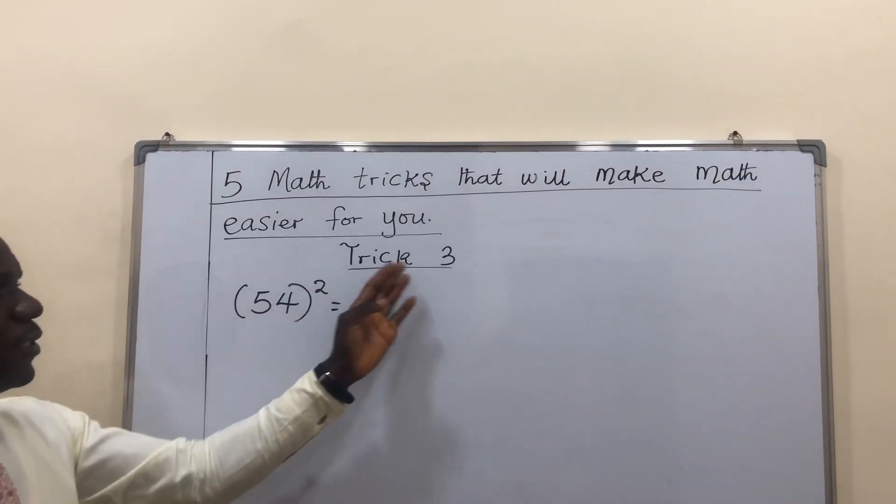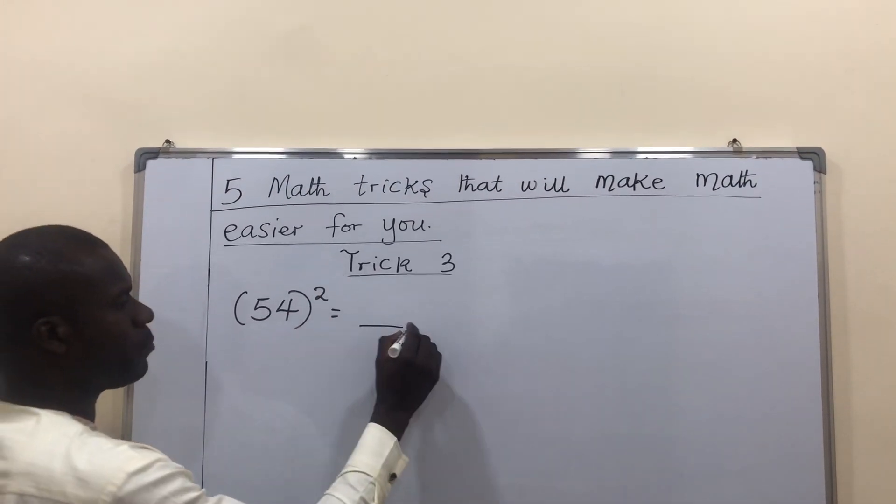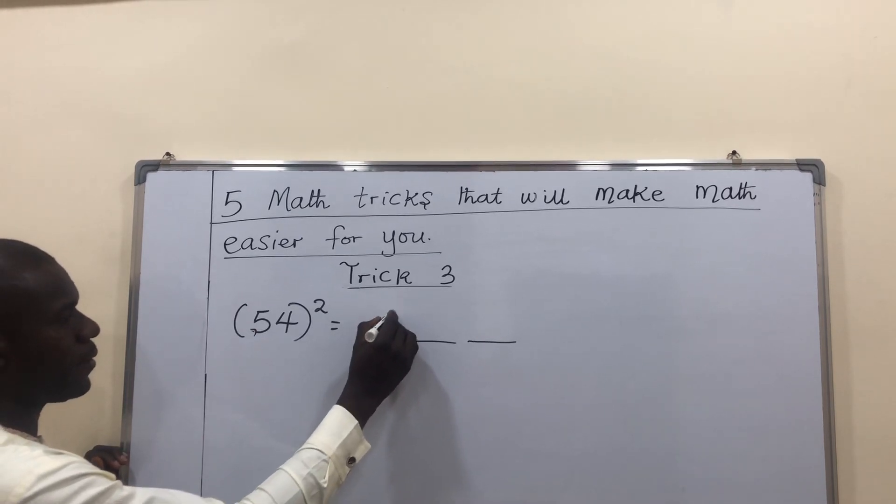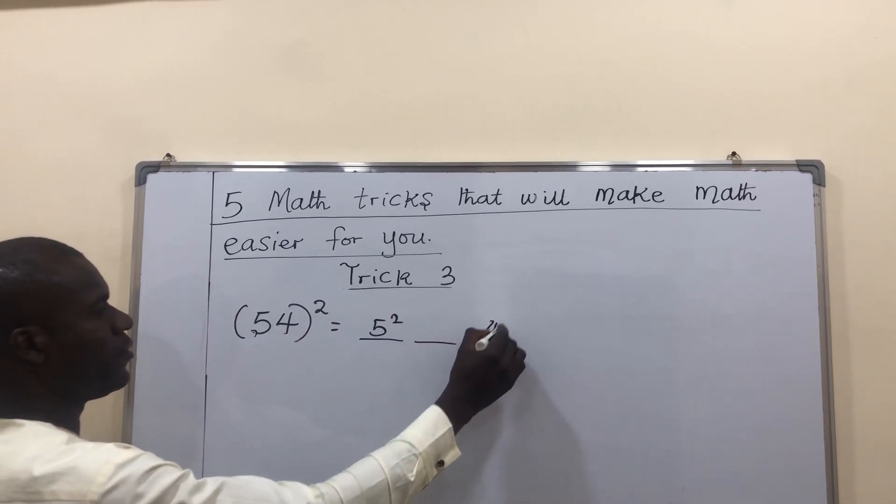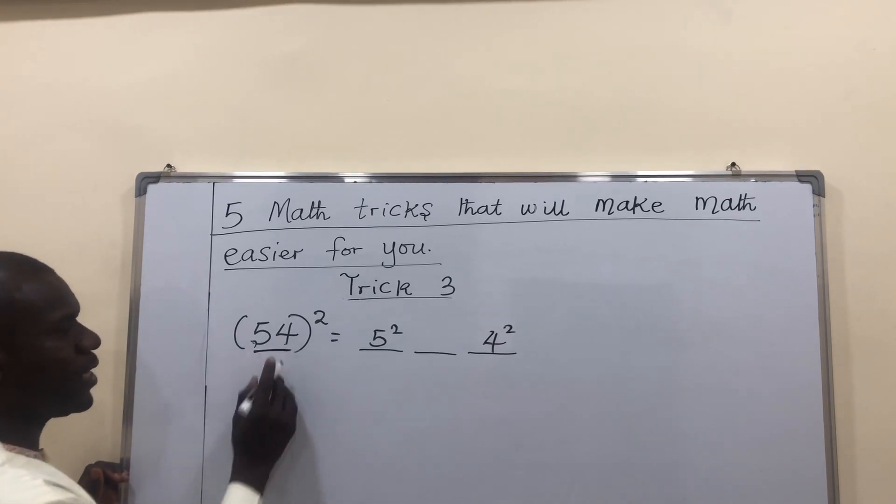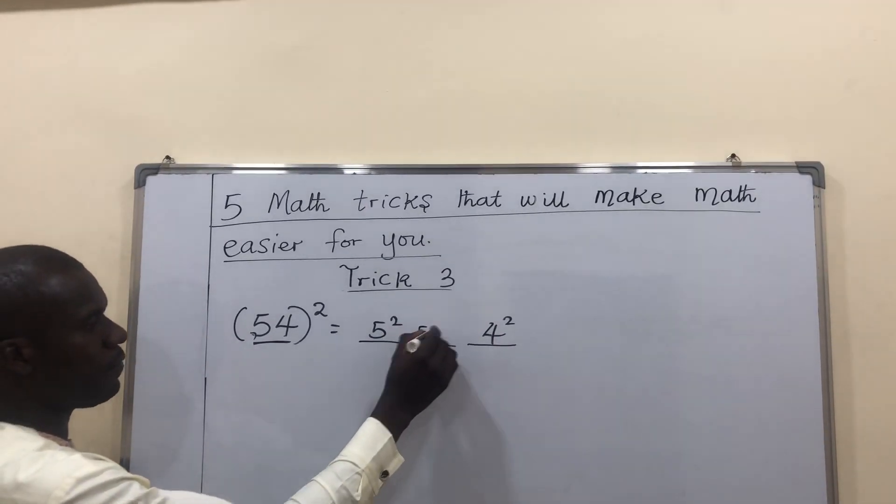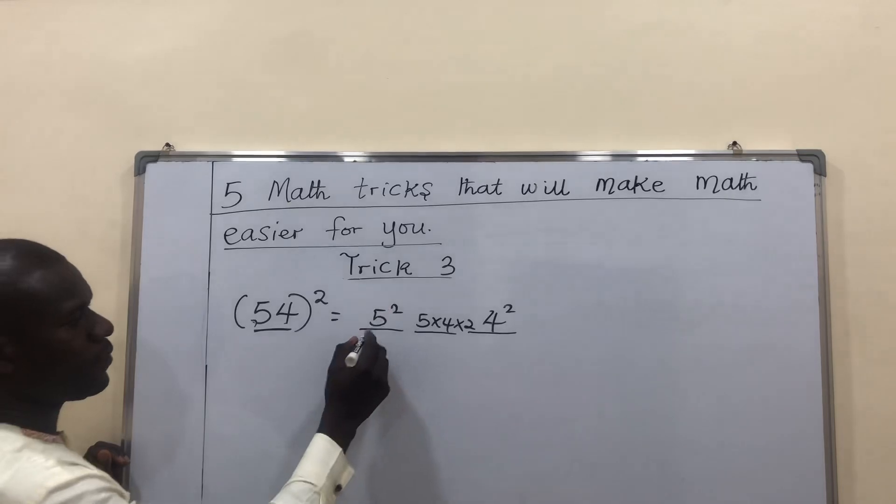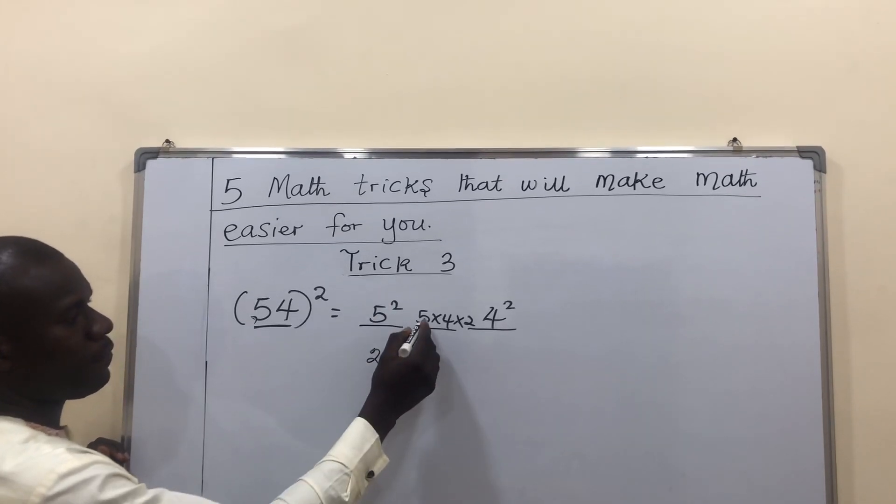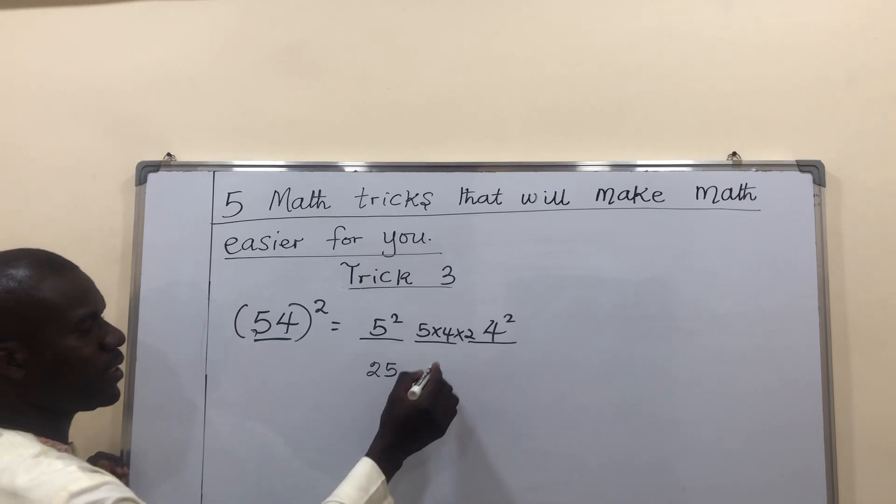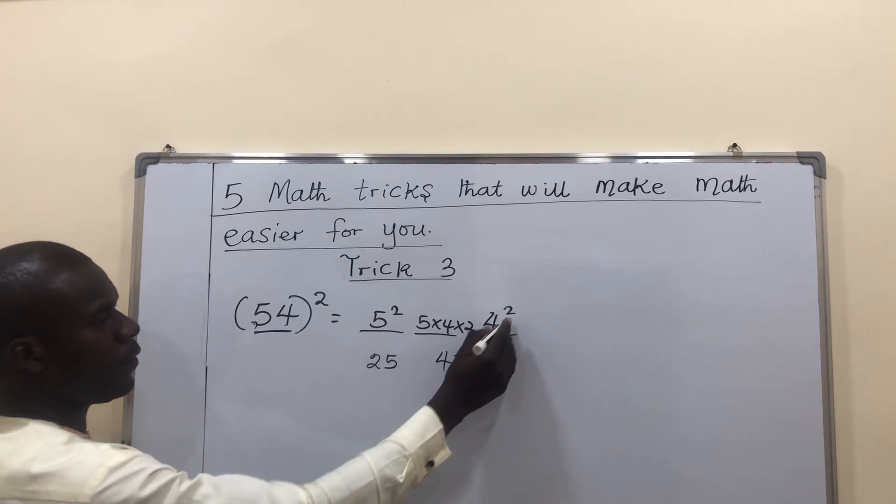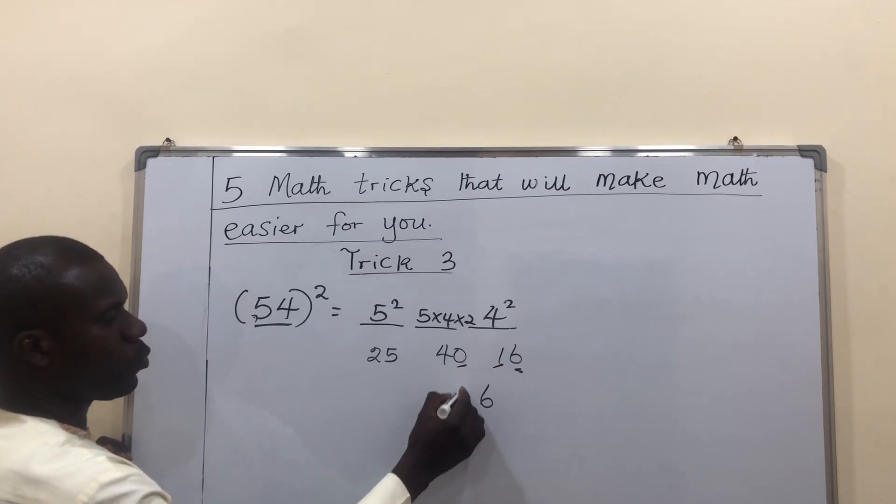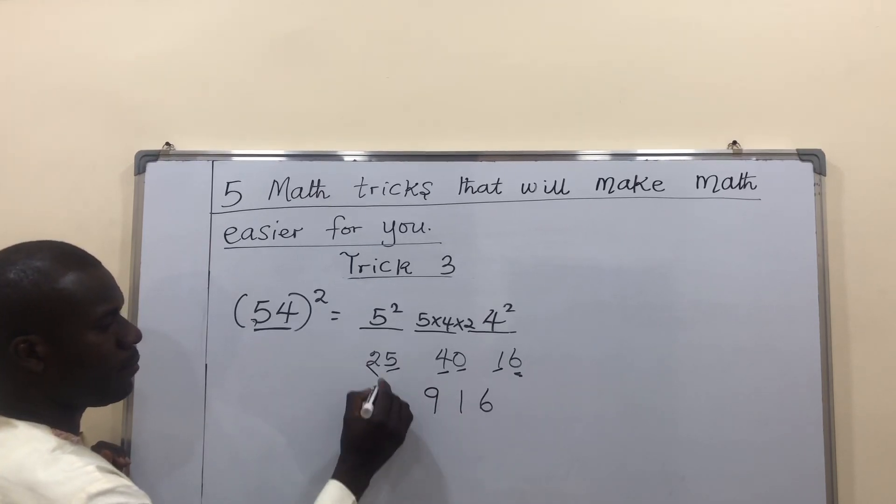Another example on trick 3. I'm going to create 3 spaces. Remember, I said this is for square numbers. Now, the first space, 5 squared, write it here. 4 squared, write it at the extreme end. Multiply everything in the bracket. It will be in the middle now. 5 times 4, times 2. 5 squared means 5 times 5, which is 25. 5 times 4 is 20. 20 times 2 is 40. 4 squared means 4 times 4, which is 16. Bring down this 6. 1 plus 0 is 1. 4 plus 5 is 9. Then bring down this 2.